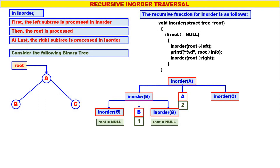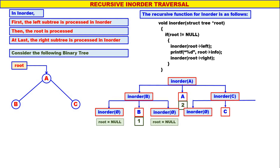Next we come to inorder of C. C is not equal to null. Left child of C is null, therefore inorder of null. Display C. Right child of C is also null, therefore inorder of null — root is equal to null, nothing happens. C will be the third one to be displayed. Again inorder of null — nothing happens. So the recursion tree is over.